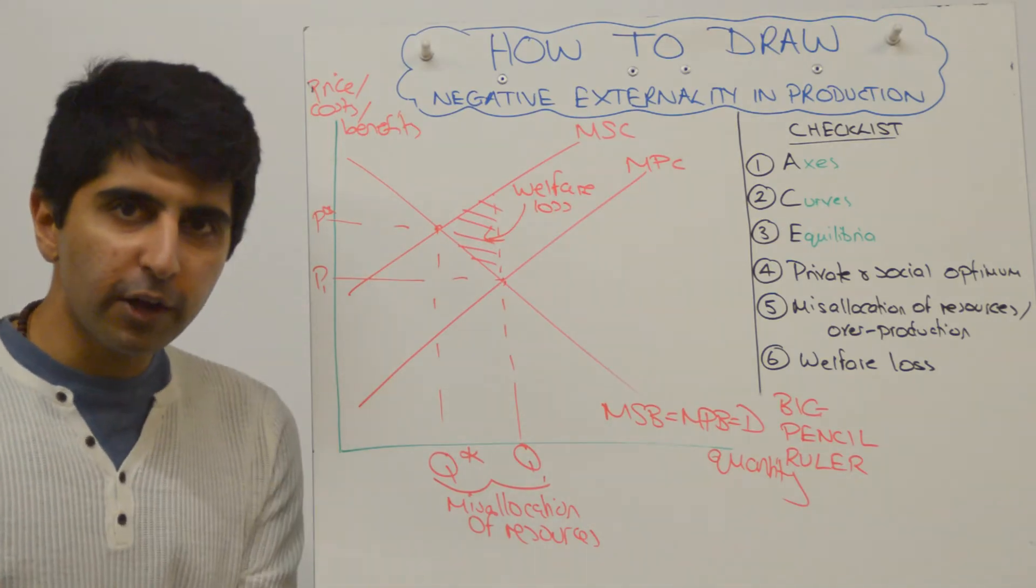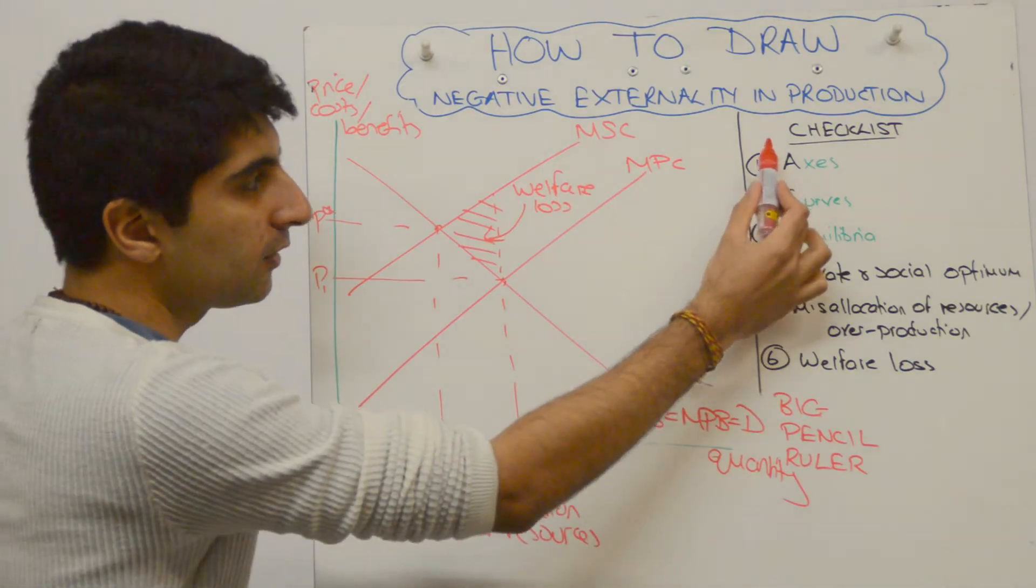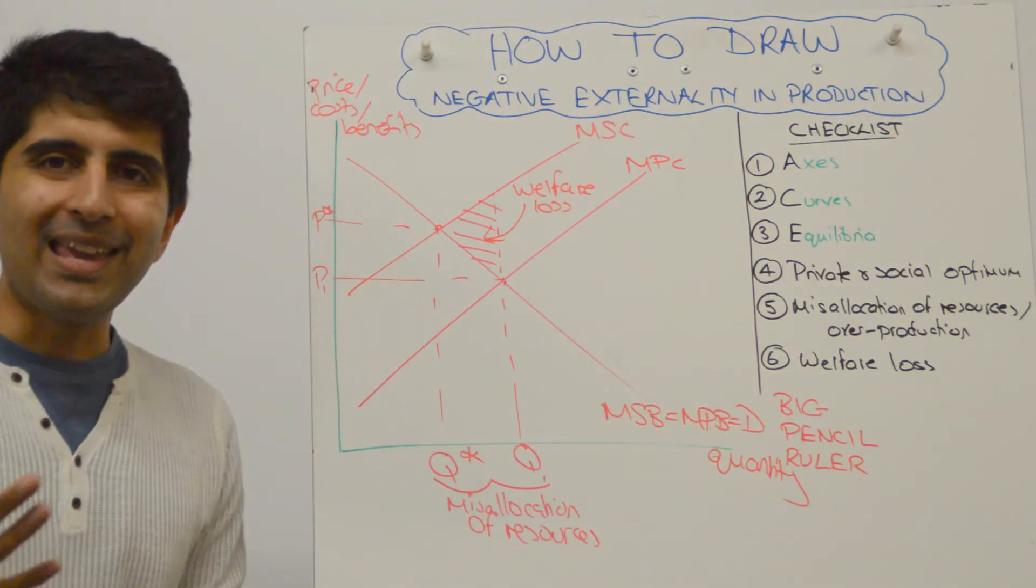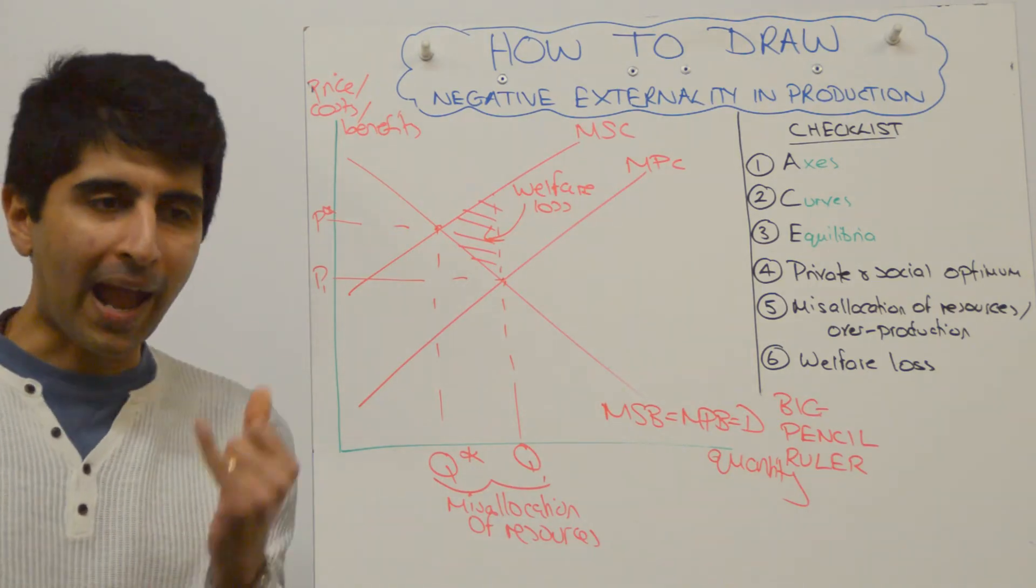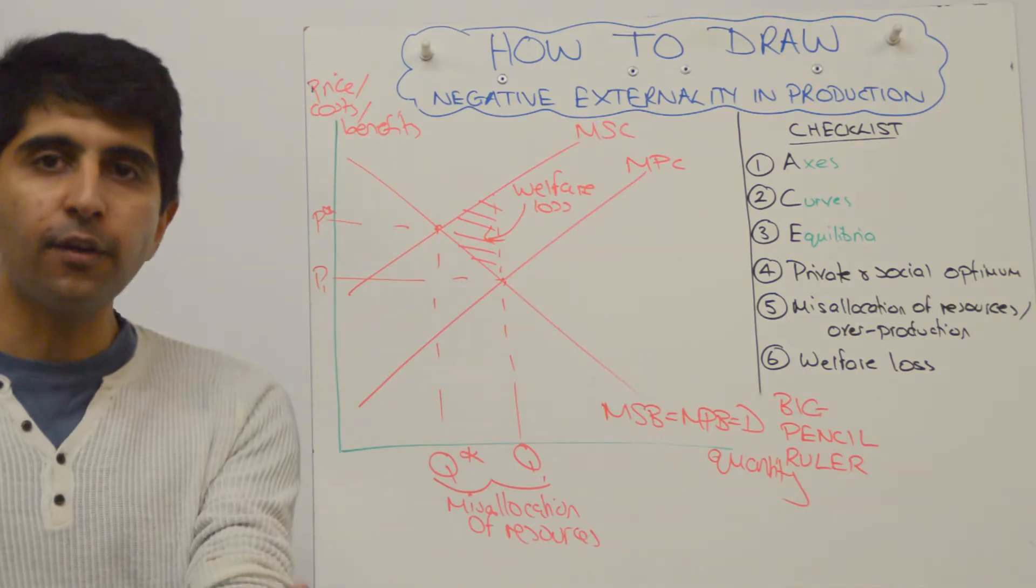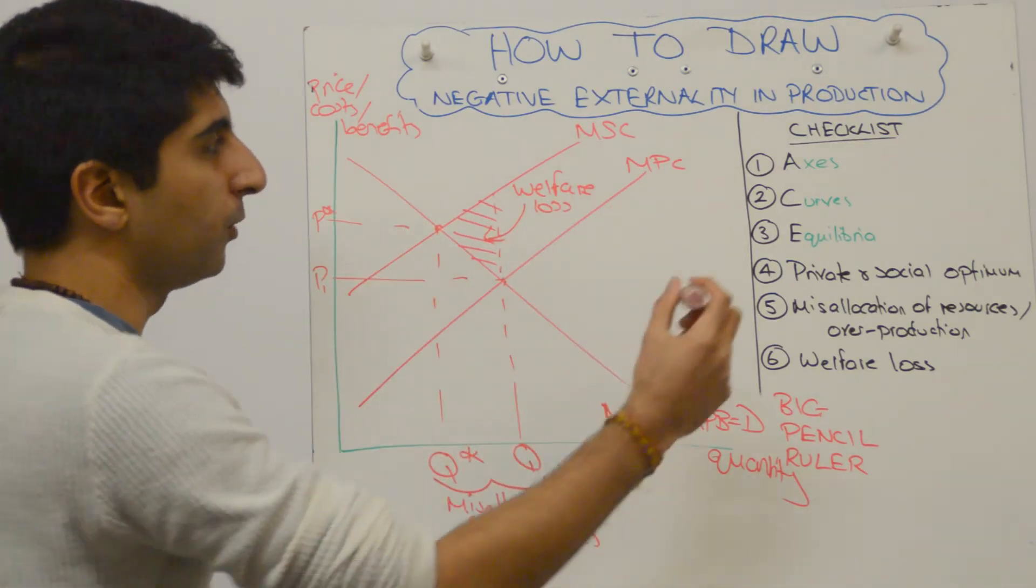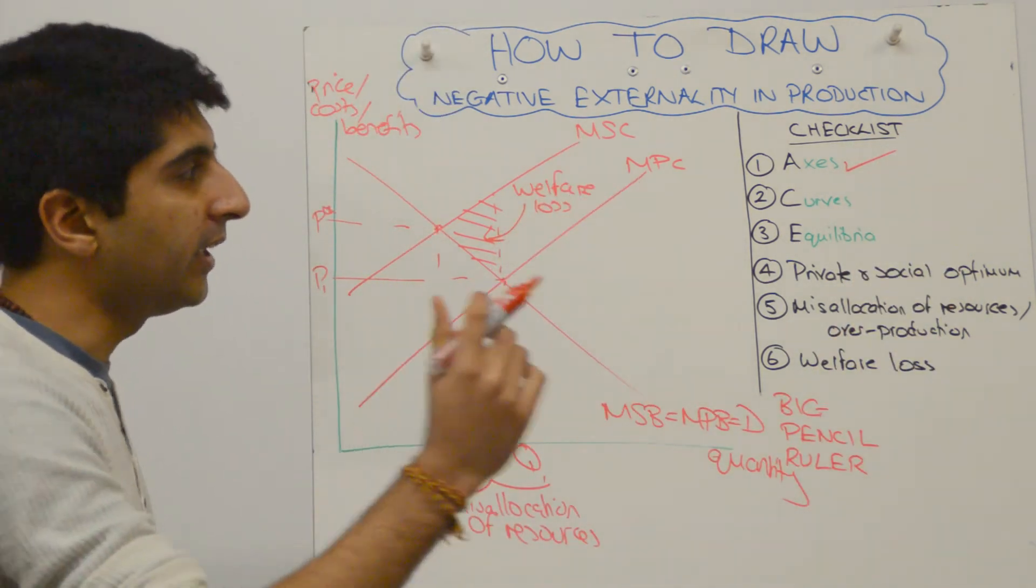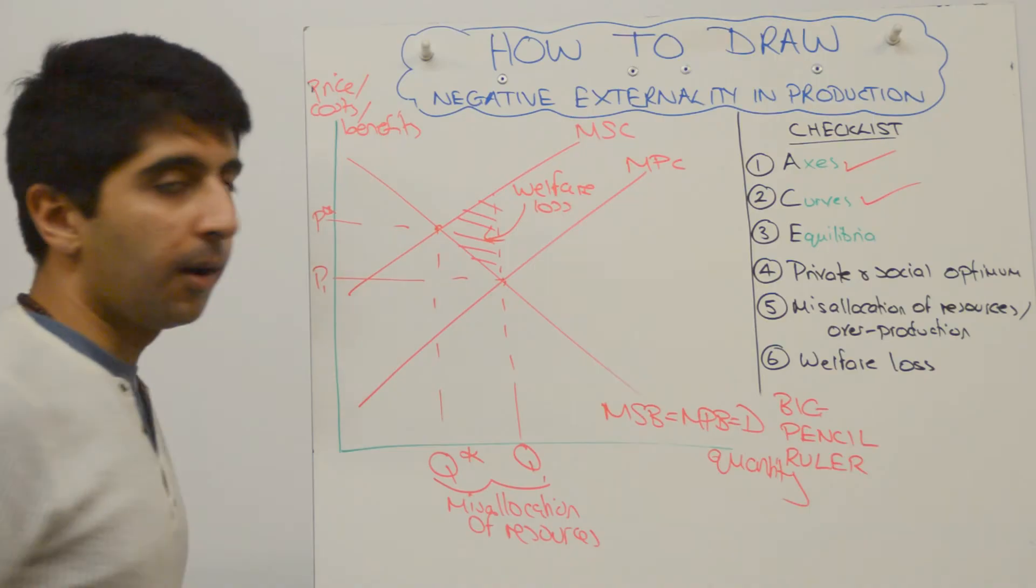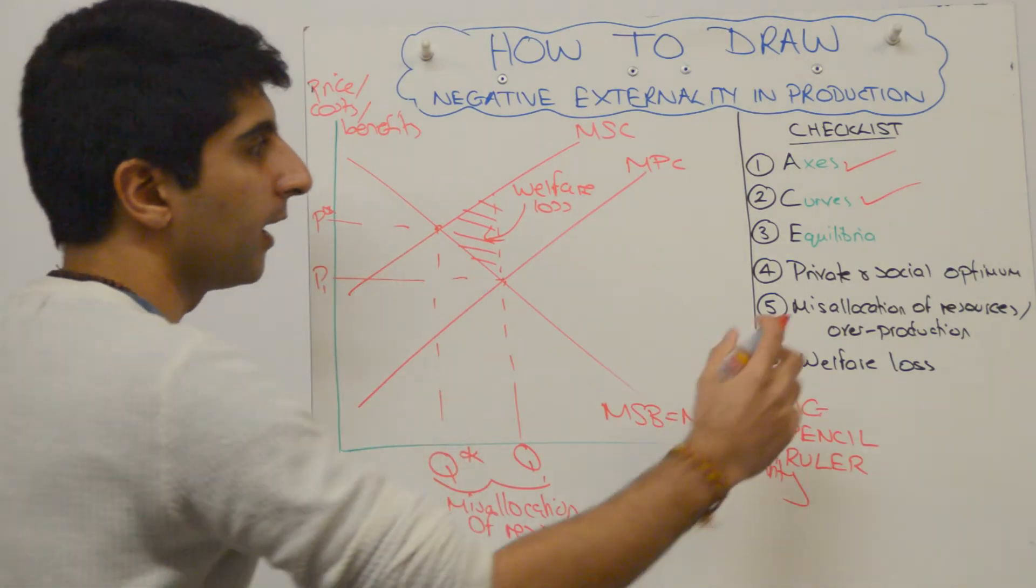When you finish your diagram, good habits is to go over your mental checklist and make sure everything is done right. I have a little technique here, which is ACE. In your mind, you should think, I'm always looking to draw ACE diagrams. My axes are always labeled, my curves are always labeled, my equilibria are always labeled. Are my axes labeled? Yes. Are my curves labeled? All of them fully. Yes. Are my equilibria labeled? P1, Q1, P star, Q star. Yes, they are. Nice.